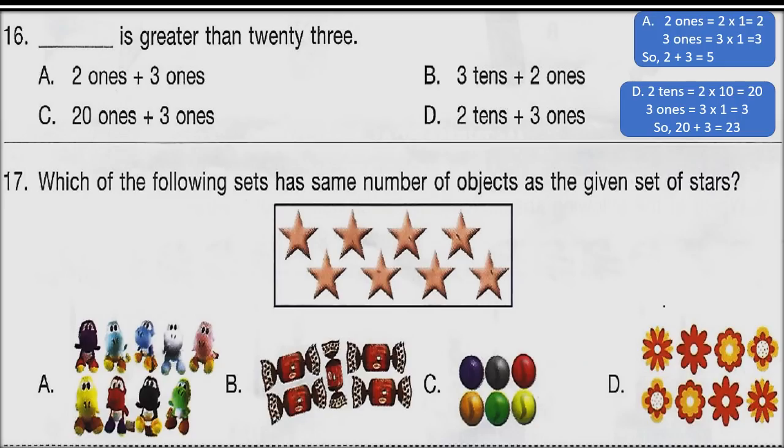Question 16: Which option is greater than 23? Options are given in the form of one sentence. As a hint — for option A, 2 ones is 2 and 3 ones means 3 into 1 equals 3, so 2 plus 3 is 5. Similarly calculate the numbers for options B, C, and D and choose which number is greater than 23.